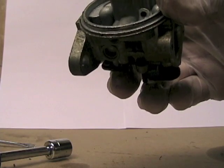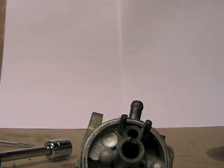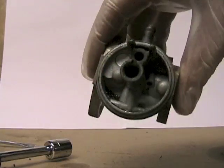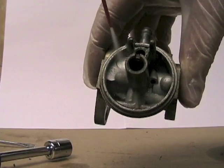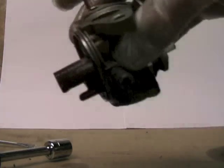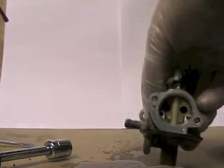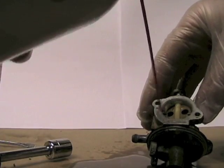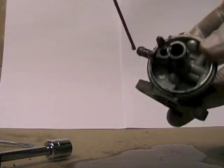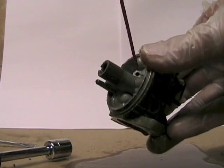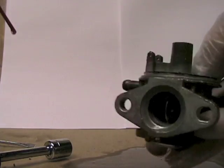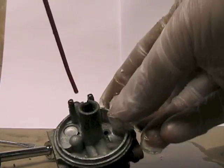I'm gonna use some carb choke cleaner on it. That's why we got the gloves. Make sure you have eye protection along with hand protection. Just gonna spray this thing all over, any hole you see, just spray it in there. I'm gonna spray some in here and just let it sit for a while.